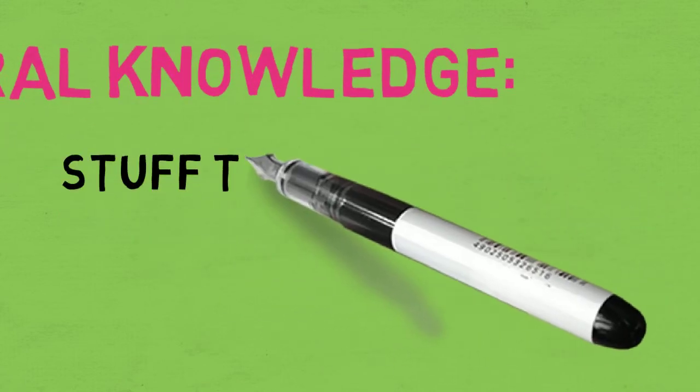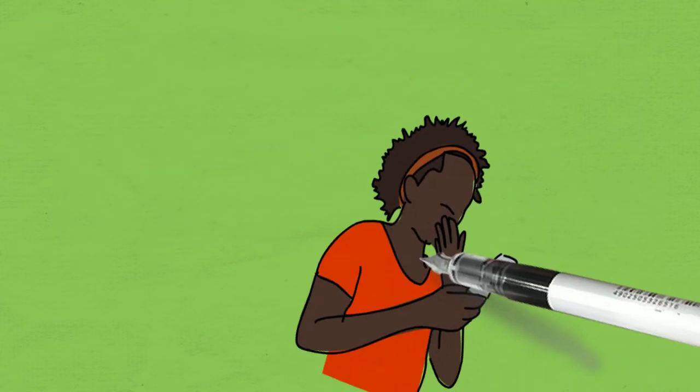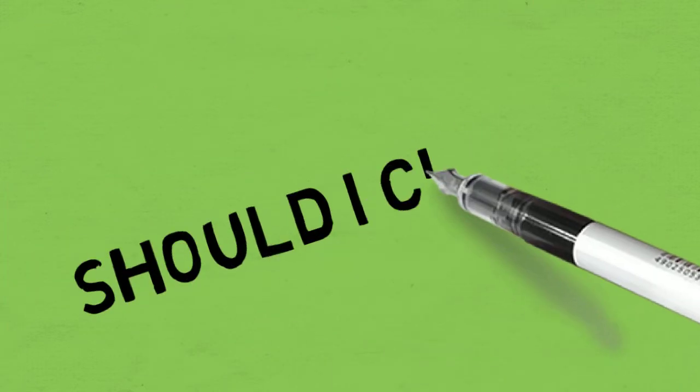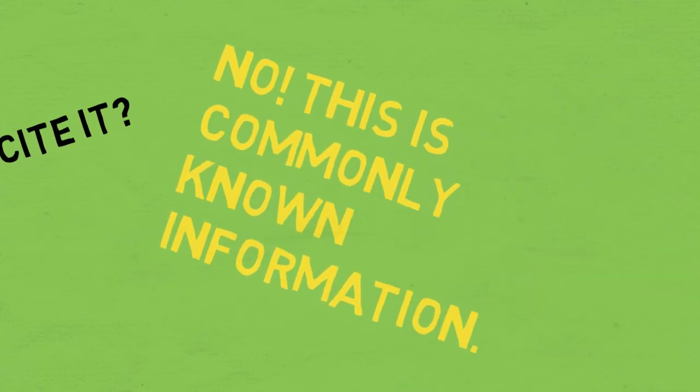General knowledge is the type of information that most people know. For example, many teenagers have cell phones. You do not need to cite general knowledge because it is not credited to one specific source.